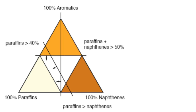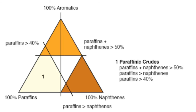All three lines together designate the Group 1, or Type 1, crude oil region in the ternary diagram — that is, the paraffinic crude oils region.